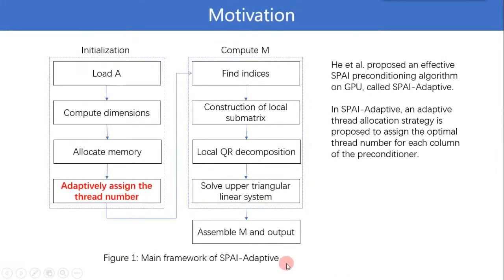In these existing works, Herr et al. proposed an effective SPAI preconditioning algorithm on GPU. Feature 1 is the main parallel framework of SPAI-Adaptive. In this algorithm, an adaptive thread allocation strategy is proposed to assign the optimal thread number for each column of the preconditioner.